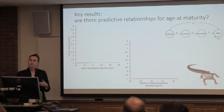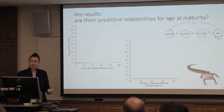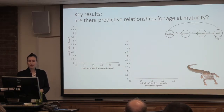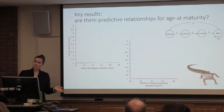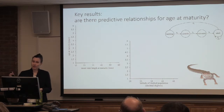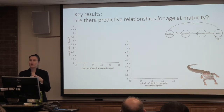So then we asked: are there predictive relationships for age at maturity? You might expect that animals with a larger snout-vent length at maturity are going to mature later, because it takes time to grow. Additionally, if the latitude of the population is high — closer to Canada than to the equator — we might see delayed age at maturity, simply because at higher latitudes the active season is shorter. If the active season is shorter, then it takes more years to acquire enough resources to grow and mature.